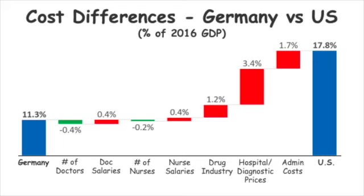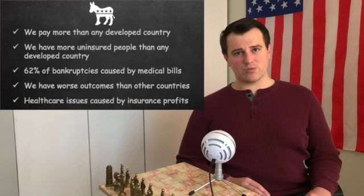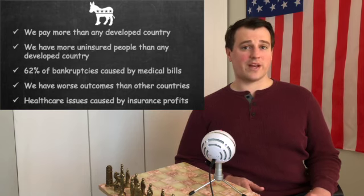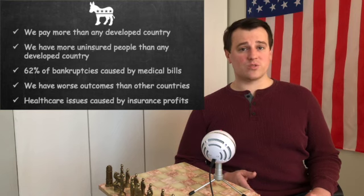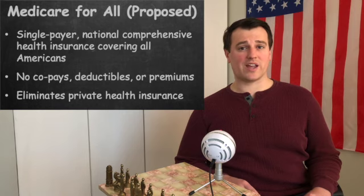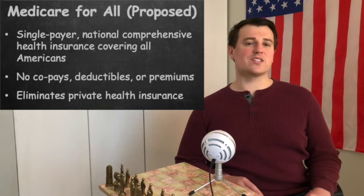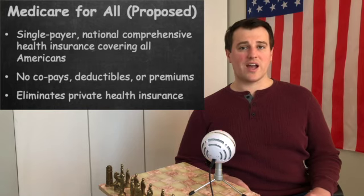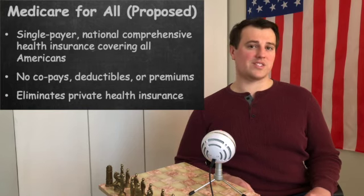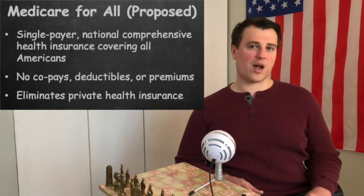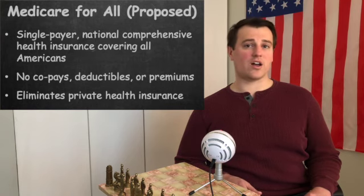To solve these issues, Medicare for All is one solution proposed by a contingent of Democrats. Using Bernie Sanders' version: it gets rid of private insurance and replaces it with Medicare coverage for everybody, with no copays, deductibles, or out-of-pocket spending. This is a single-payer system, meaning instead of private health insurance companies, employees, employers, and the government all paying health claims, you only have the government as the single insurer. This is the most progressive approach being proposed and would prohibit private insurance from covering any benefits already covered under Medicare.